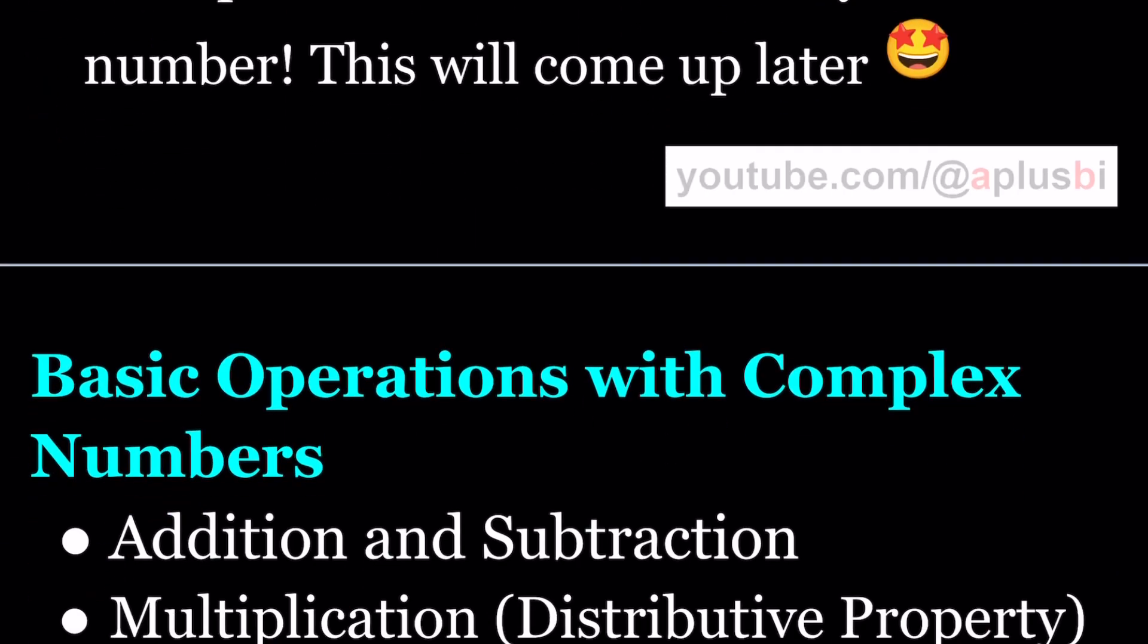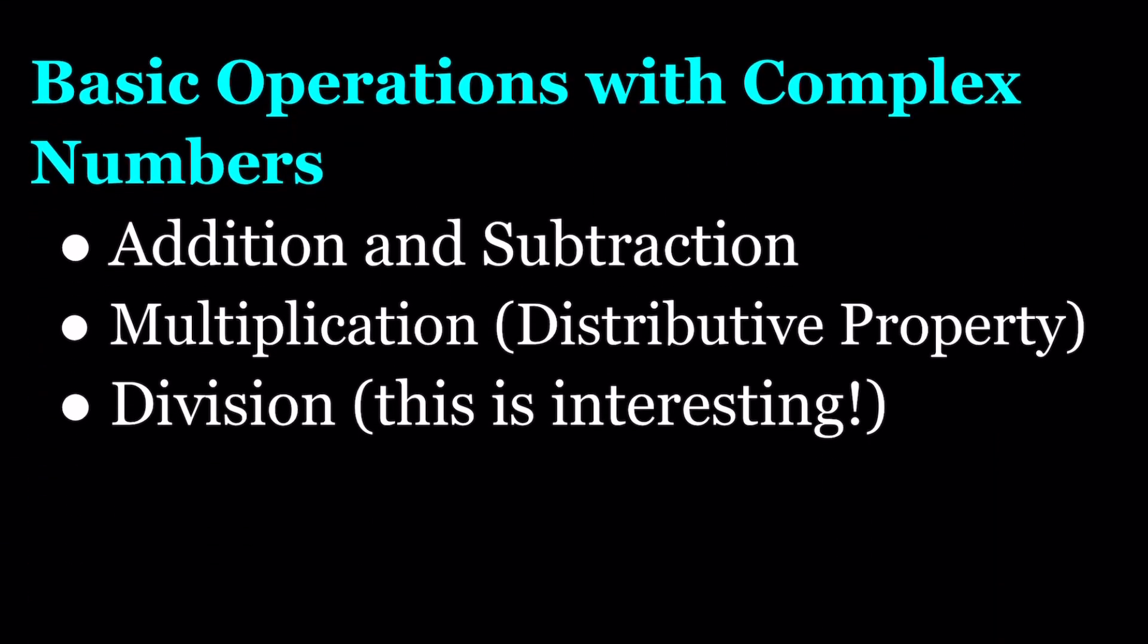Basic operations with complex numbers. In this section we talked about how to add and subtract complex numbers which is basically adding the real parts and adding the imaginary parts or subtracting them. With multiplication we use the distributive property but also make sure that you simplify by using i squared equals negative one.